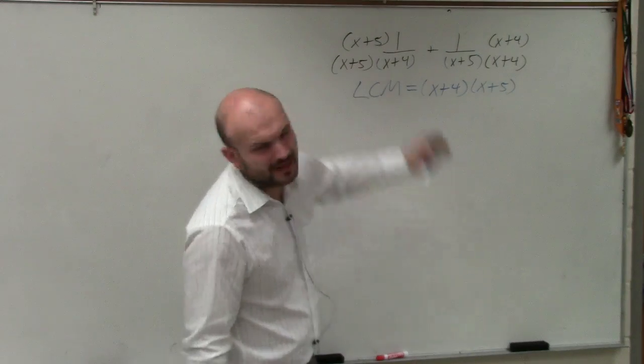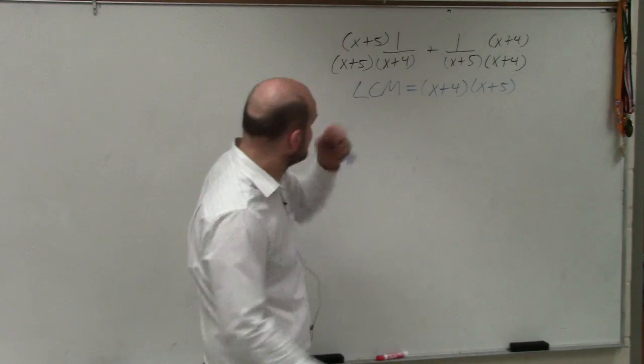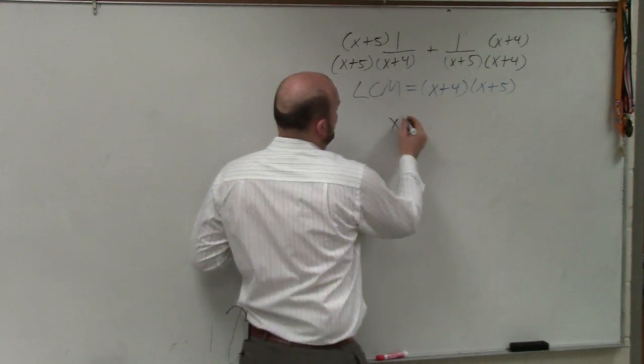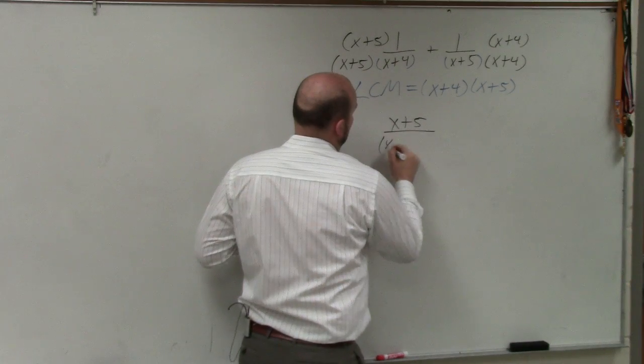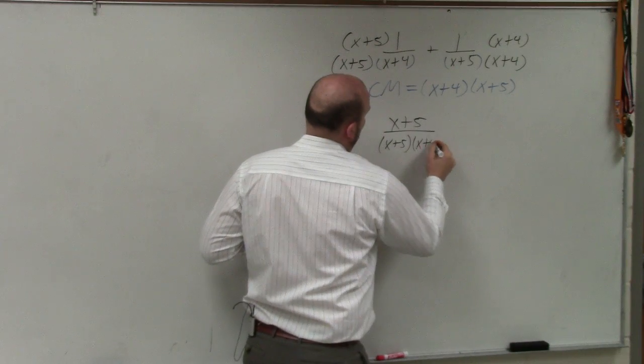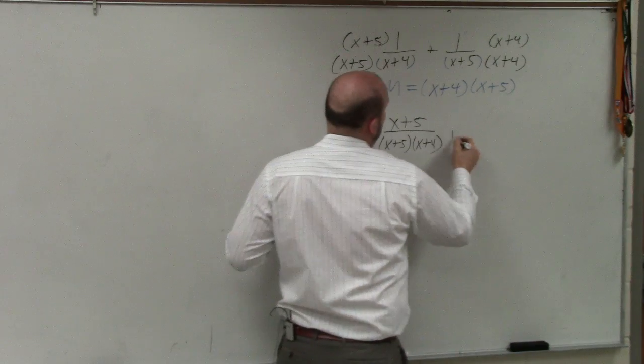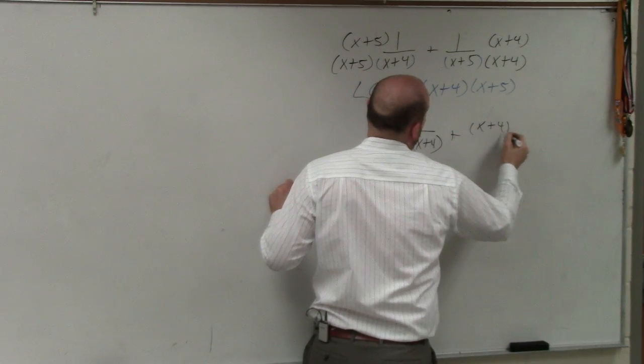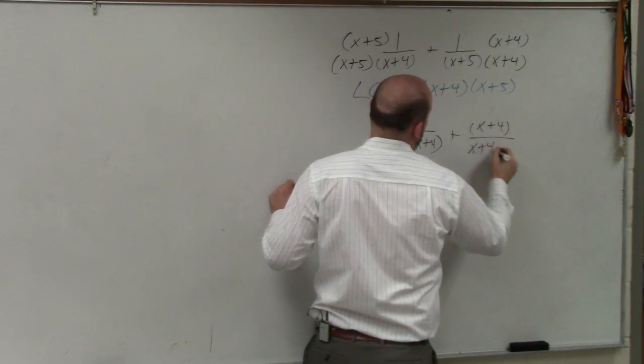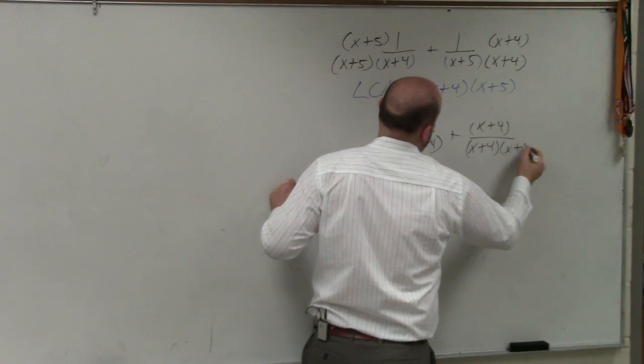OK. Now, I should have put a 2 or something up there, but that's OK. So in this example, I now have x plus 5 divided by x plus 5 times x plus 4, and then plus x plus 4 over x plus 5 times x plus 5.